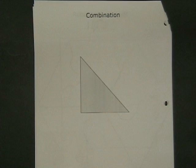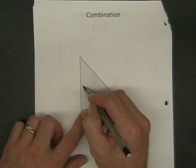Number the sides of the isosceles right triangle, one, two, three.